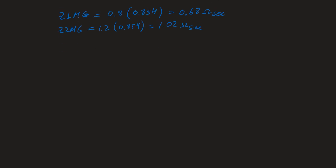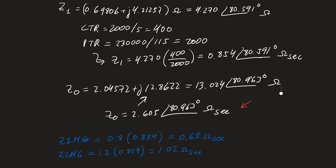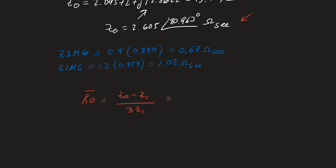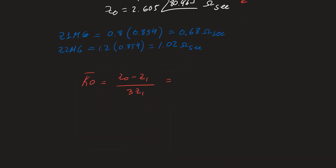Going back to the notebook, K0 = (Z0 - Z1) / (3 × Z1), using the values in secondary ohms. Make sure not to mix primary and secondary terms — you can use either, since the units cancel out. Calculating this gives K0 = 0.683 at an angle of 0.553 degrees, which is unitless.